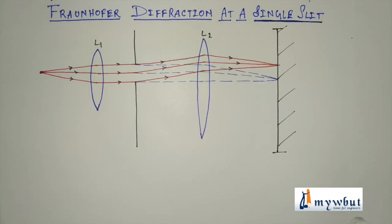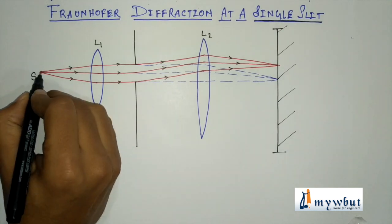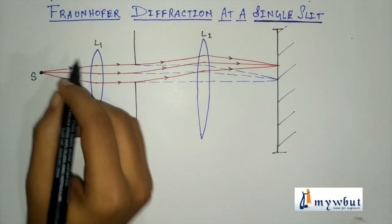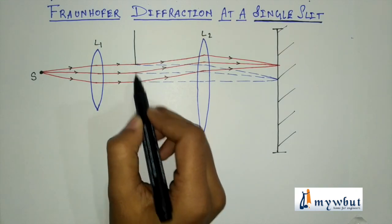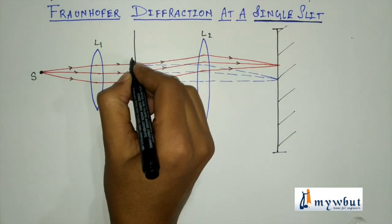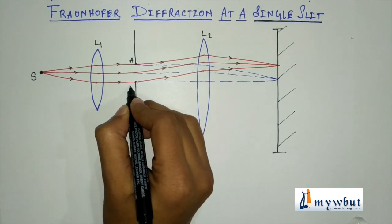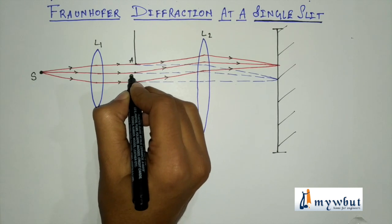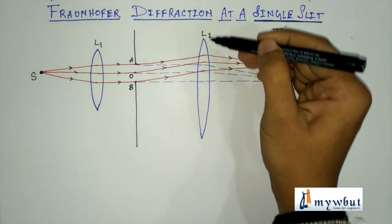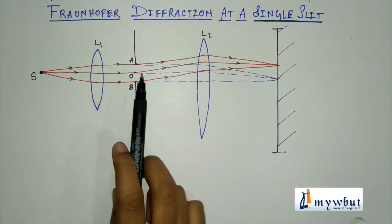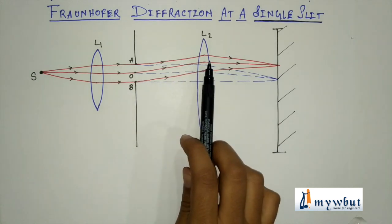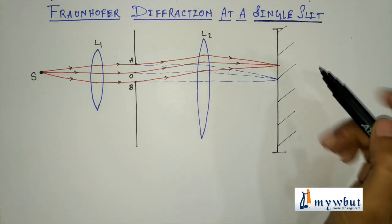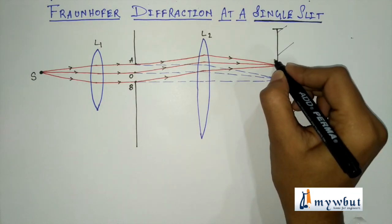This is the schematic diagram for Fraunhofer diffraction at a single slit. Here is the source of light. The beams of light pass through lens L1. This is the slit from point A to point B, with point O at the center, passing through another lens labeled L2. We consider three beams from A, O, and B getting diffracted, passing through lens L2, finally reaching the screen at a point we name P.